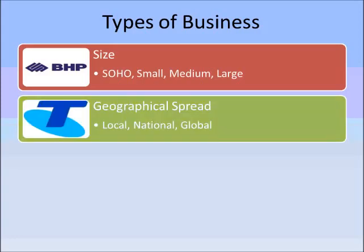A second way we distinguish businesses is based on their geographical spread, at three levels. Local basically means the business operates only in the local area. Examples of this would be a corner shop or a retail store on the main street of Boweral that only has a presence in the local area and serves customers in their local area.